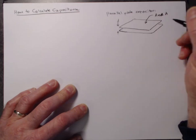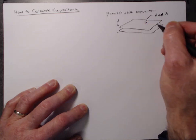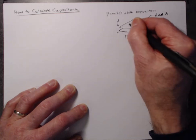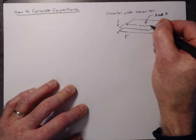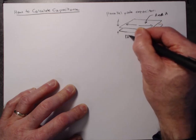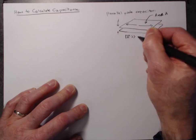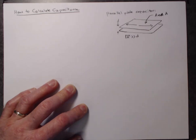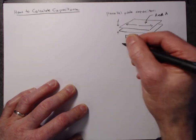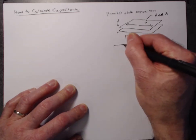We are also going to assume that the length of the sheets, the lateral size of this, which is of order the square root of A, that that's much bigger than the separation between the sheets. In a side view, it would look like this.